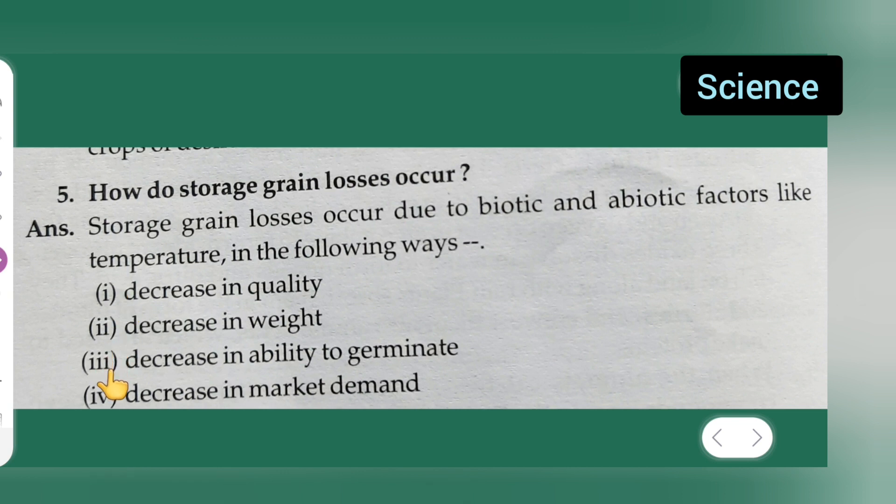First, there are four points. First is decrease in quality. Second is decrease in weight. Third is decrease in ability to germinate. And the fourth point is decrease in market demand. This is the answer. I hope you all have understood and thanks for watching.